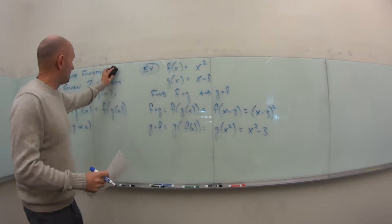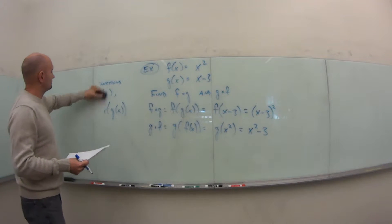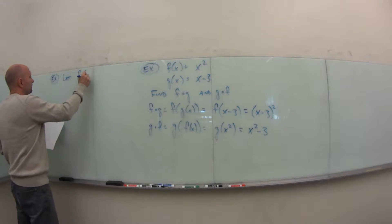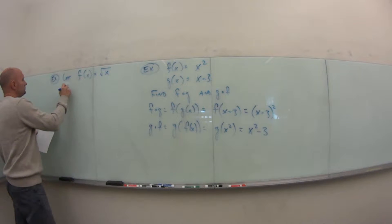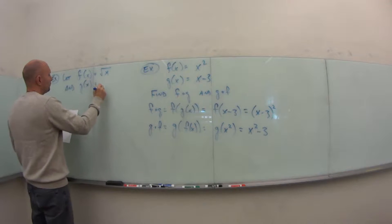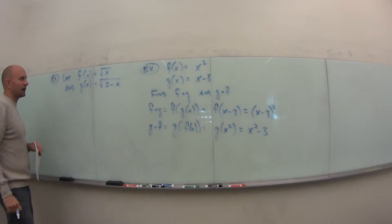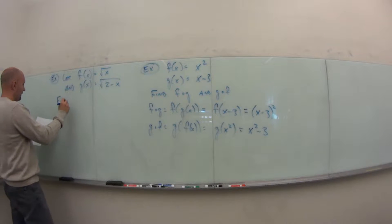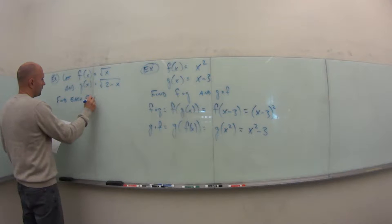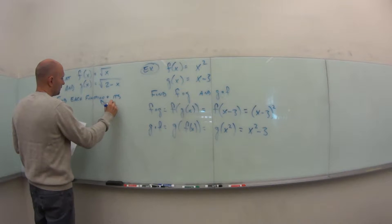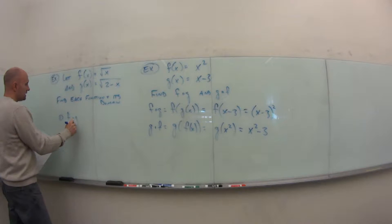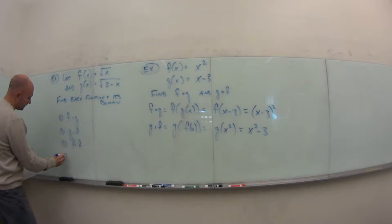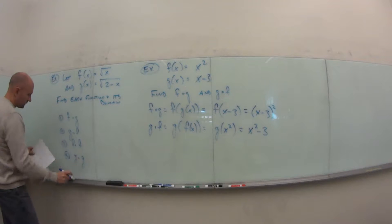That's a straightforward example. Let's look at another one. Let f(x) = √x and g(x) = √(2 − x) — the same functions from video 2. We want to find each composite function and its domain: f∘g, g∘f, f∘f, and g∘g.